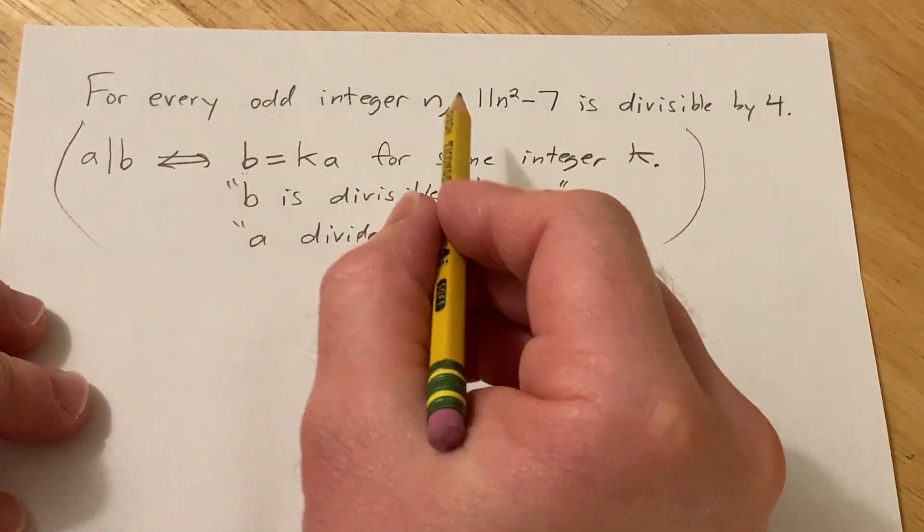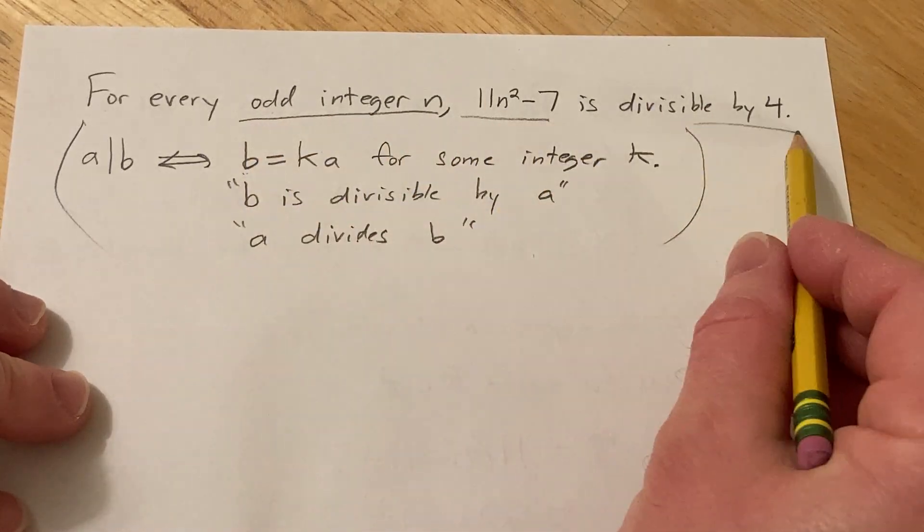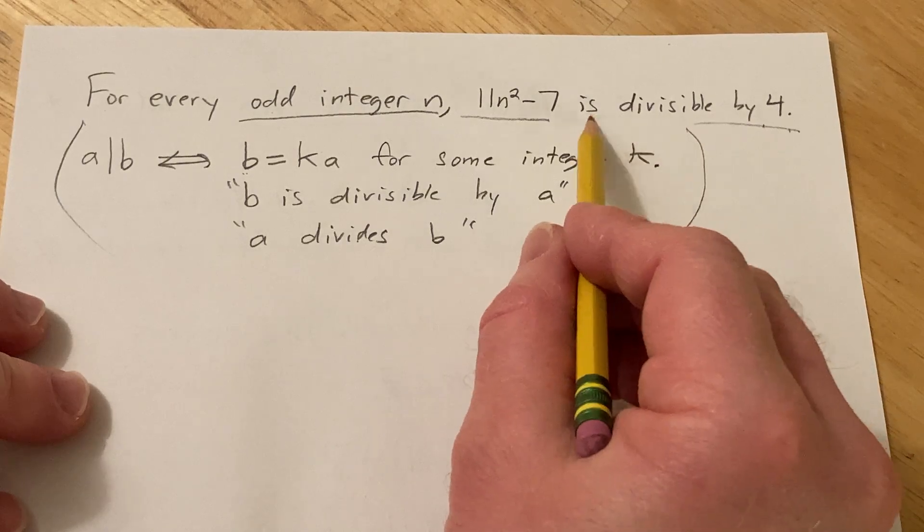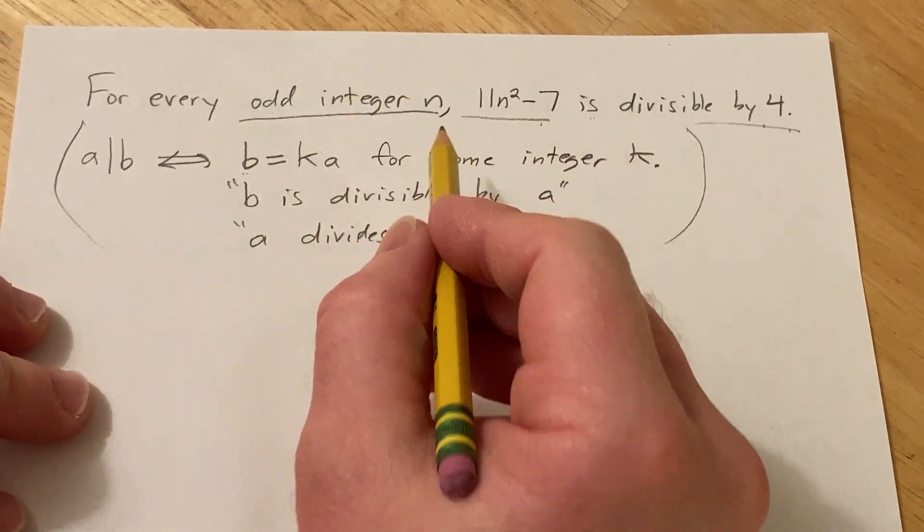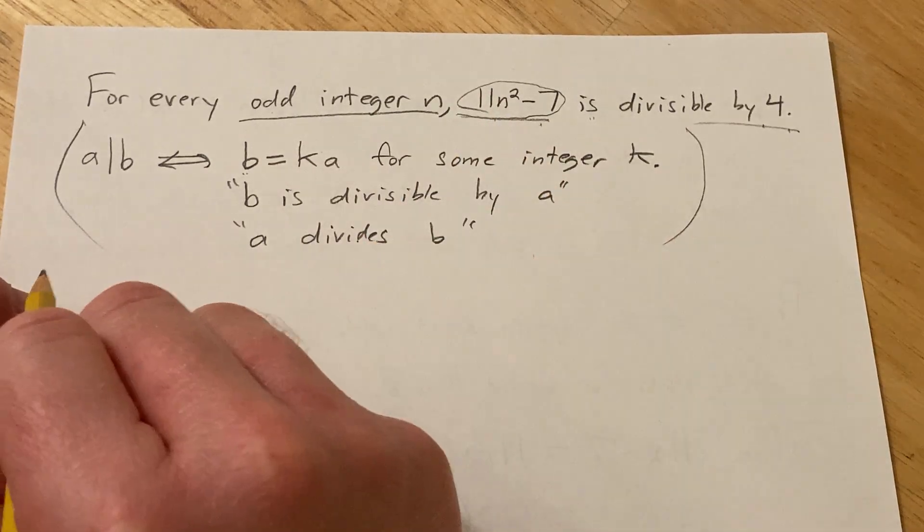So in this particular problem we have to show that for every odd integer n, this one is divisible by 4. In other words, it's a multiple of 4. So we can write this as 4 times an integer.